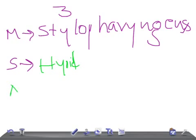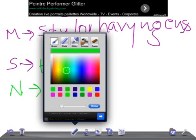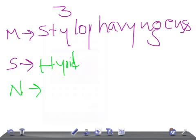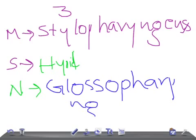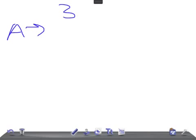The nerve that arises from the third pharyngeal arch is the glossopharyngeal nerve — cranial nerve number nine. This is really very important. Now moving on to the artery that arises from this arch.